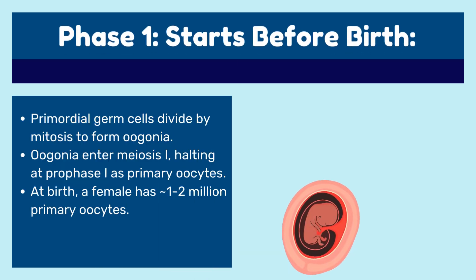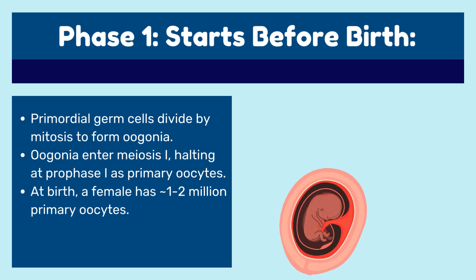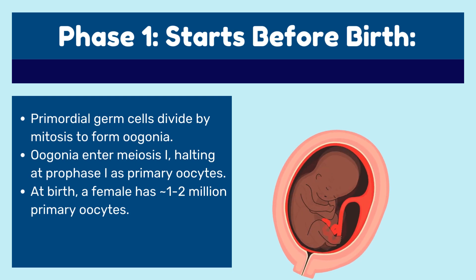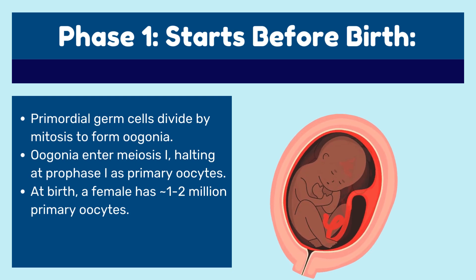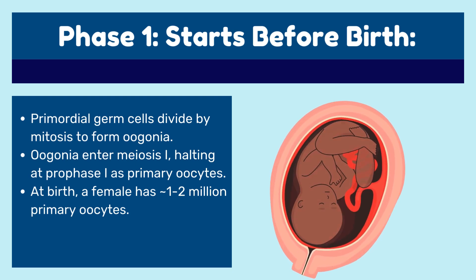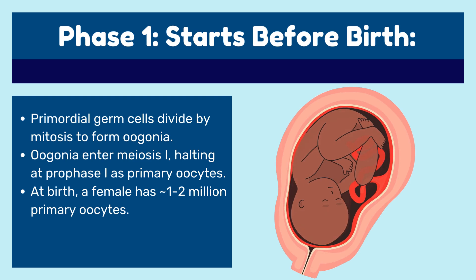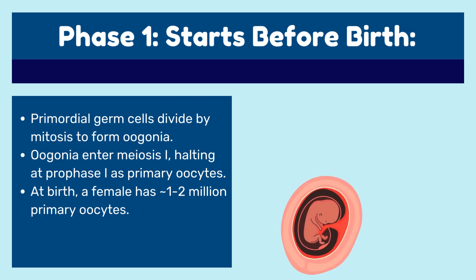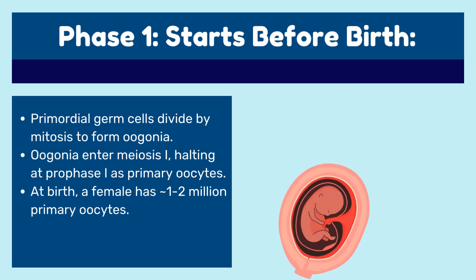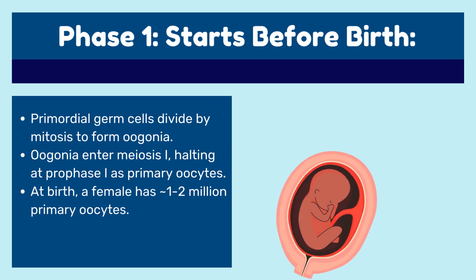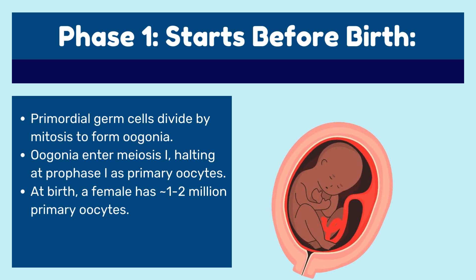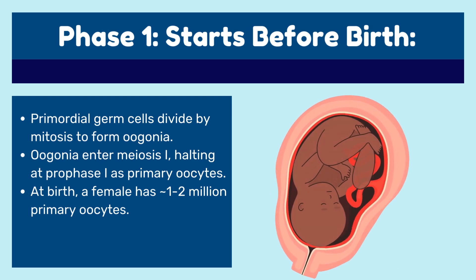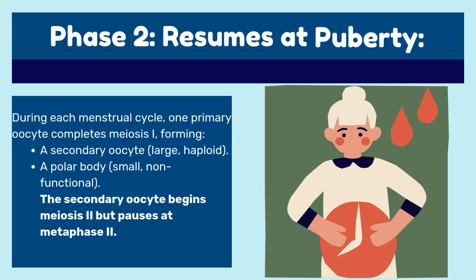Phase one starts before birth. In this phase, primordial germ cells divide by mitosis to form oogonia. Oogonia enter meiosis one, halting at prophase one as primary oocytes. At birth, a female has one to two million primary oocytes.